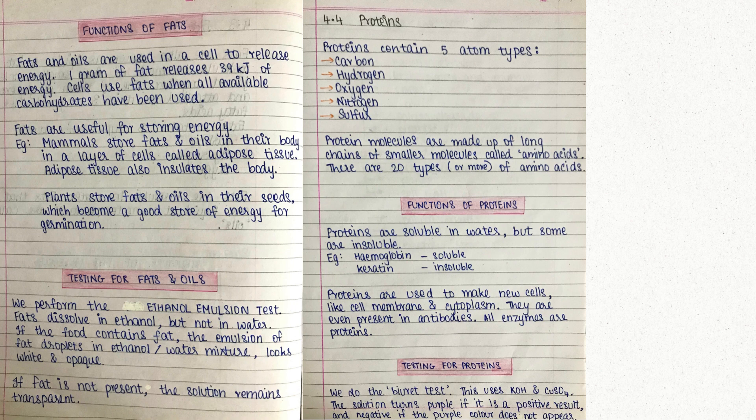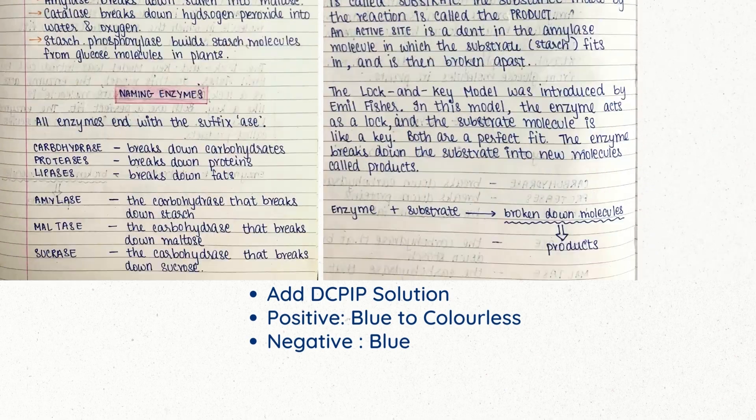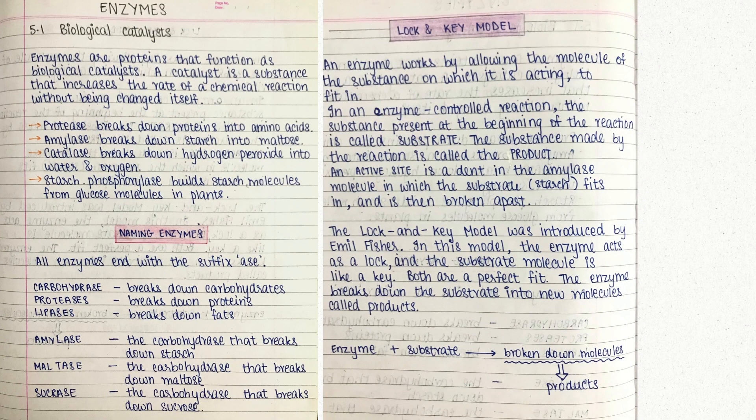To test for fats and oils, we do the ethanol emulsion test. Fats can dissolve in ethanol but cannot dissolve in water. So if the food contains fat, an emulsion of fat droplets will form in the ethanol-water mixture, which will look white and opaque. But if fat is not present, the solution will remain transparent.